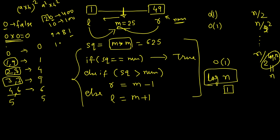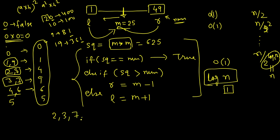So all perfect squares can only end in the digits 0, 1, 4, 5, 6, or 9 — just 6 possible last digits out of 10. The digits 2, 3, 7, and 8 never appear as the last digit of a perfect square. So we can filter: if the last digit is 2, 3, 7, or 8, we immediately return false.